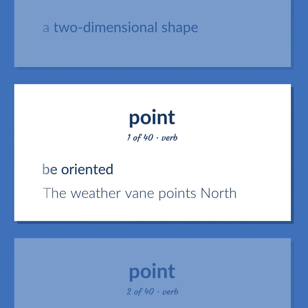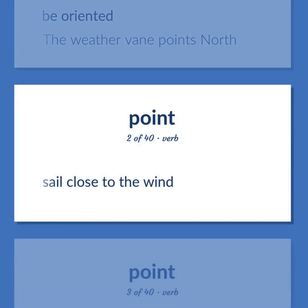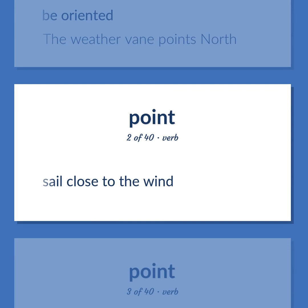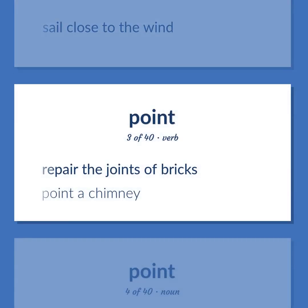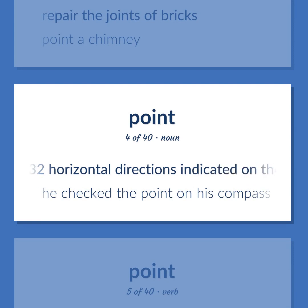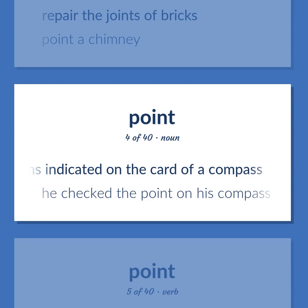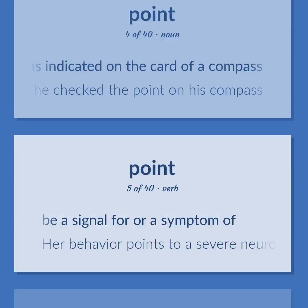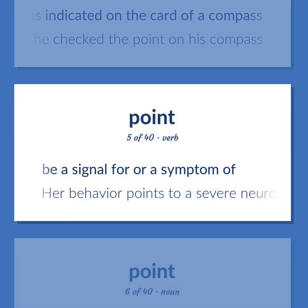Be oriented. The weather vane points north. Sail close to the wind. Repair the joints of bricks. Point a chimney. Any of 32 horizontal directions indicated on the card of a compass. He checked the point on his compass. Be a signal for or a symptom of. Her behavior points to a severe neurosis.